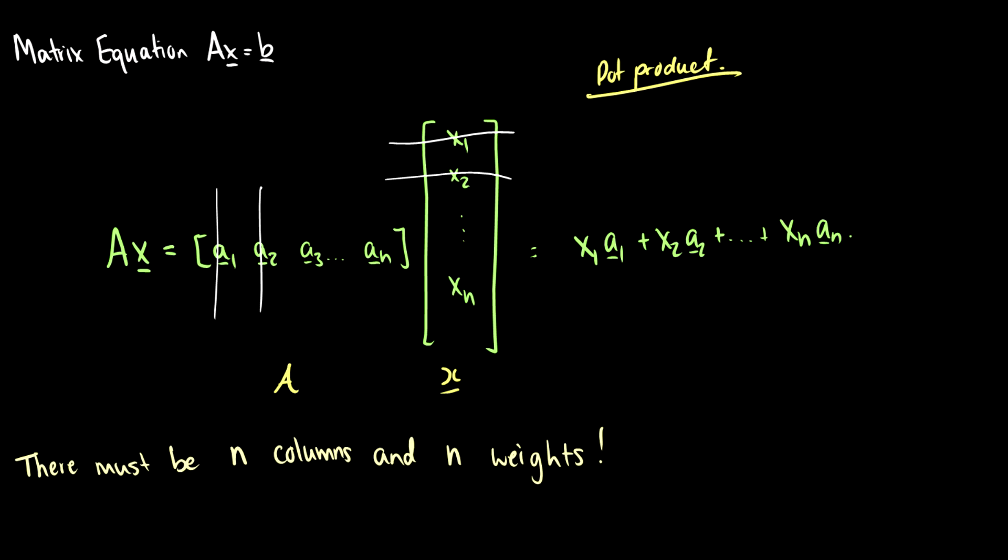Otherwise we get this weird thing where let's say we had xn plus one at the bottom here. Well we'd be saying plus we don't have anything to do. We don't have a zero there so we can't multiply by zero but we have this thing we need to multiply by xn plus one and we simply cannot do that. So the number of columns in the matrix must equal the number of rows in the vector for this to work.